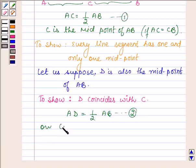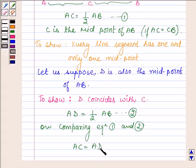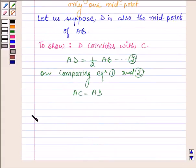So, on comparing equation 1 and 2, we find that the right-hand sides of both equations are equal. So left-hand sides are also equal, and AC is equal to AD, which implies C coincides with D.